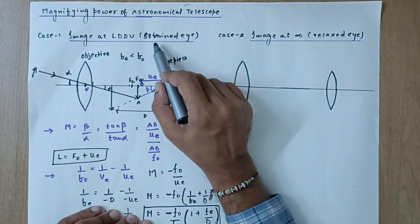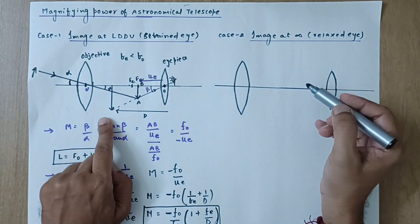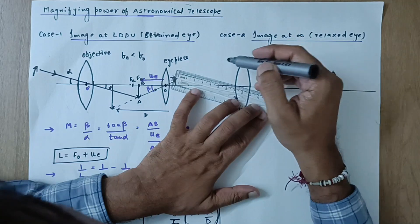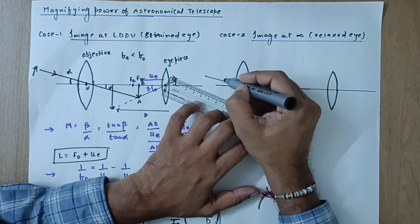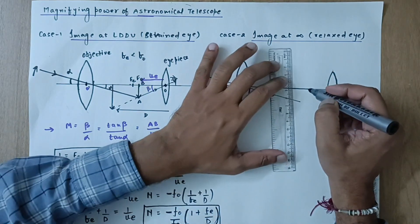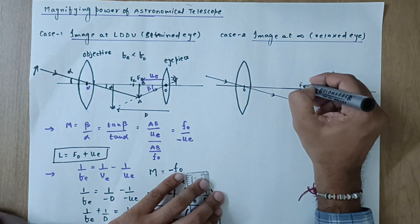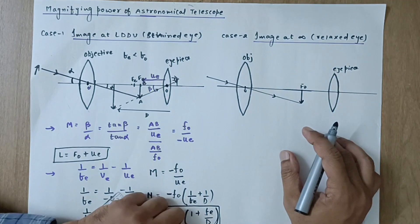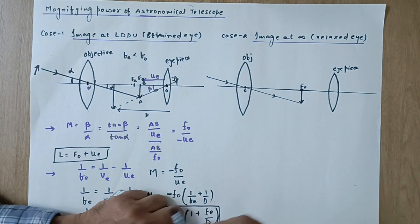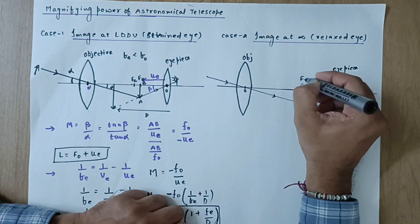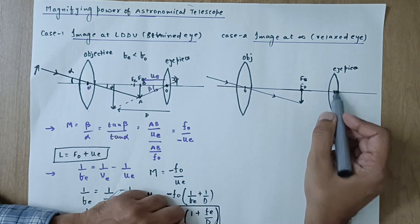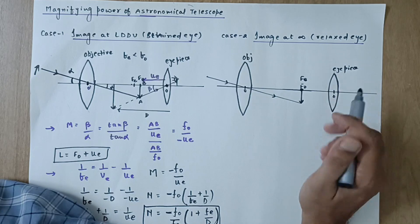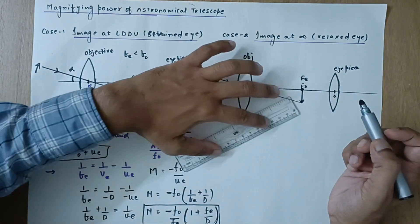Case 1 was the strained eye case with image at LDDV. In Case 2, the final image is at infinity — the relaxed eye case. Again, rays come from infinity at a slant, pass through the optical center of the objective without deviation, and form an intermediate image at the focal plane of the objective. This time, the focus of the eyepiece coincides exactly with this image point, so the object for the eyepiece is at its focus.